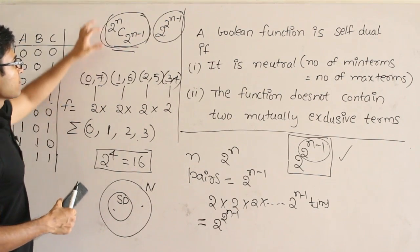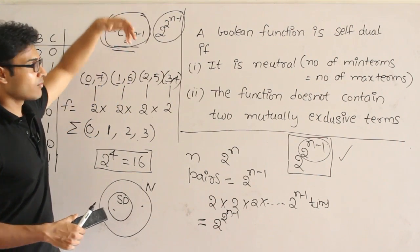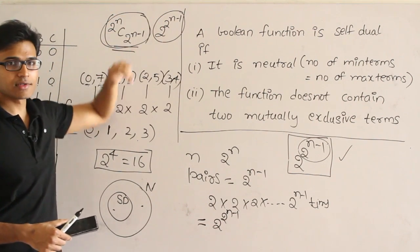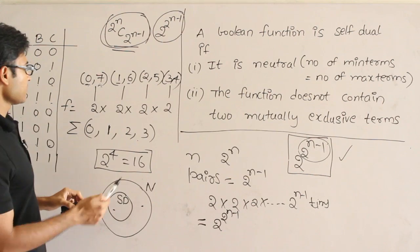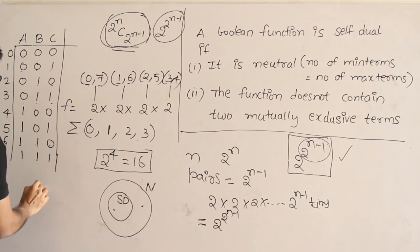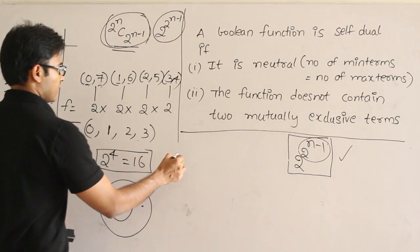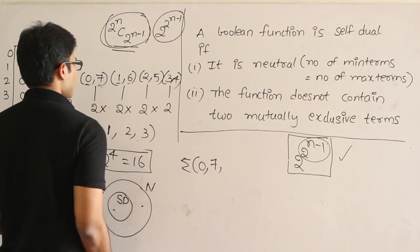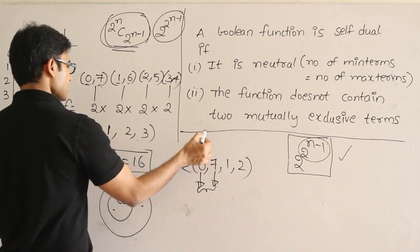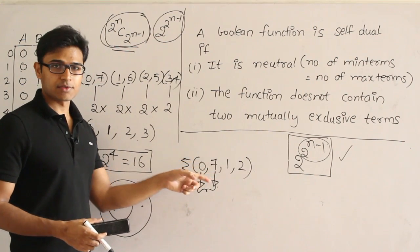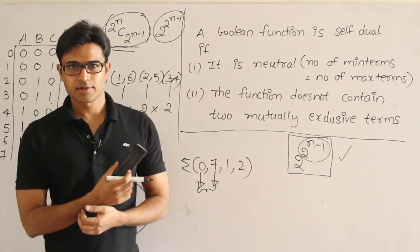Obviously the number of neutral functions will be greater than the number of self-dual functions, because self-dual is a subset of neutral. For example, if you include minterm 0 and also minterm 7 — its mutual exclusive term — along with minterms 1 and 2, a minterm and its mutual exclusive term are both present, so this fails the self-dual condition. Therefore this function cannot be a self-dual function, but it is a neutral function since 4 out of 8 minterms are chosen. Every neutral function may not be self-dual, but every self-dual function is definitely neutral.